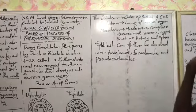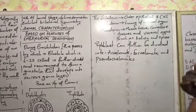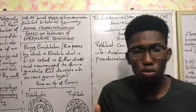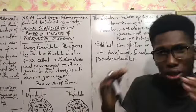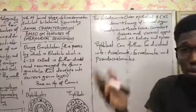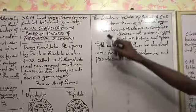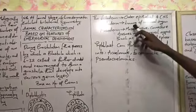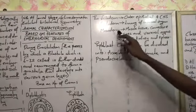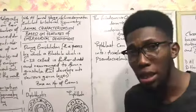The ectoderm, during embryological development, begins to form all the outer epithelial tissues and your central nervous system. The endoderm grows to form the lining of the internal organs. The mesoderm forms the muscle tissues, connective tissues, and the visceral organs such as the kidney and spleen.